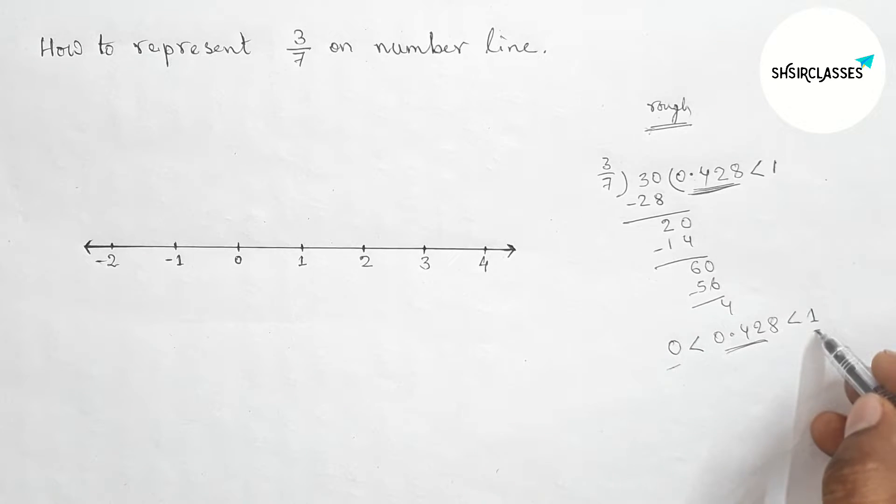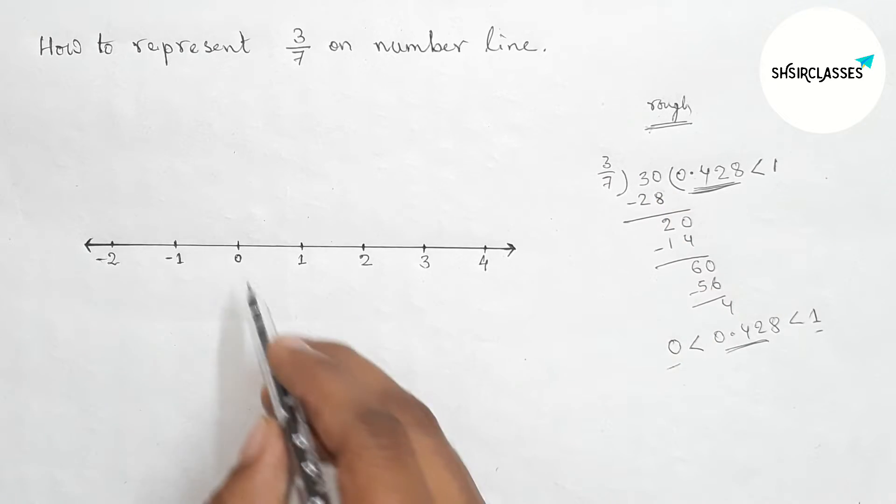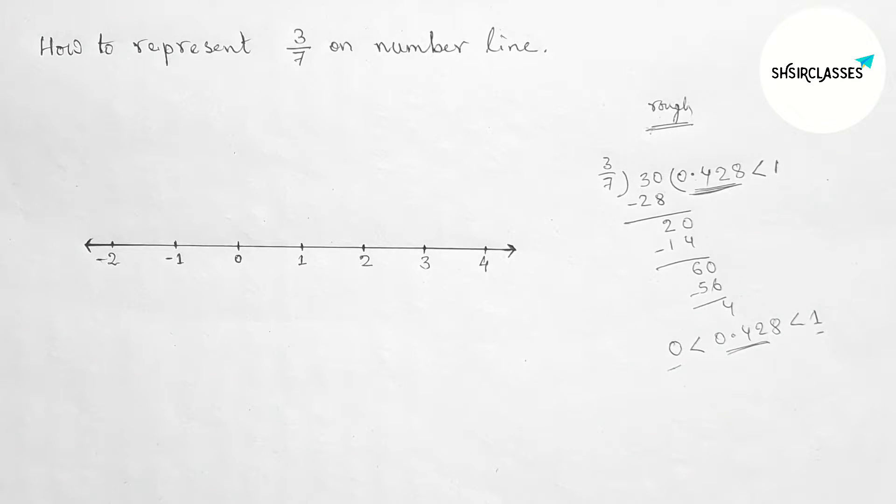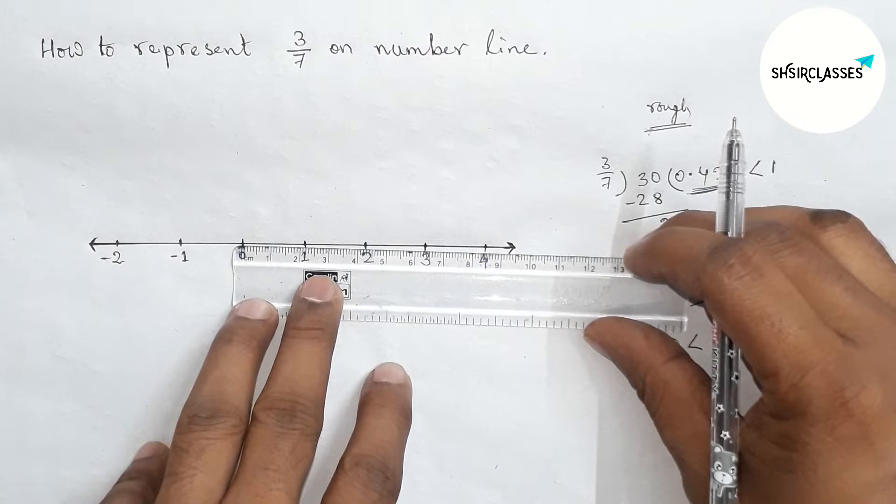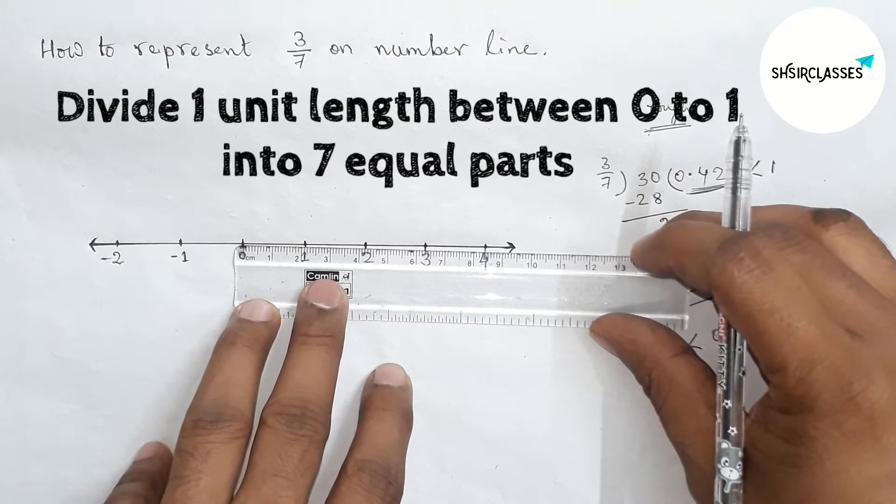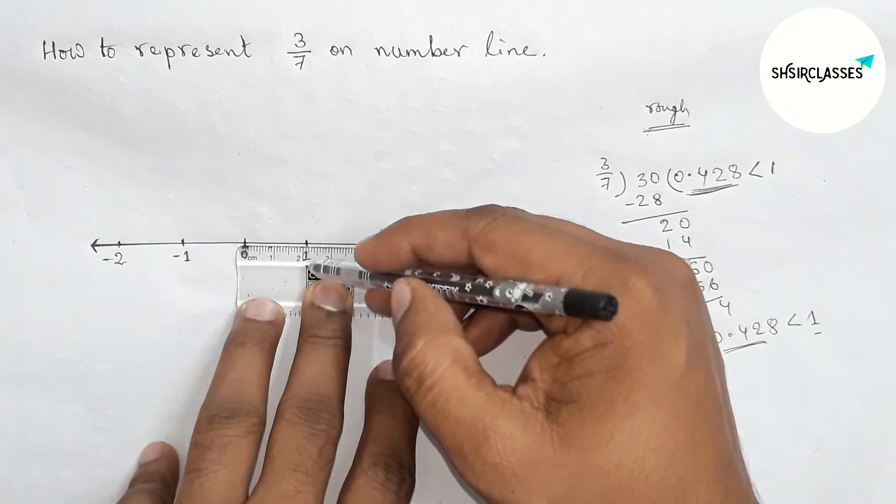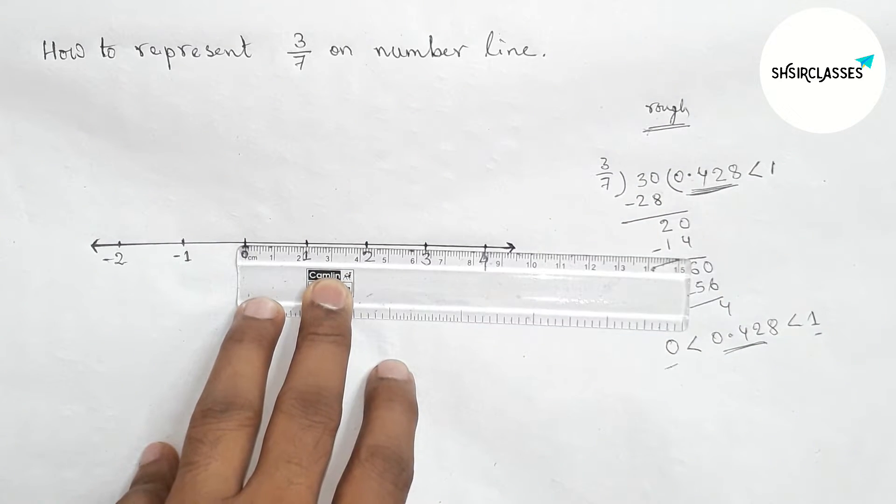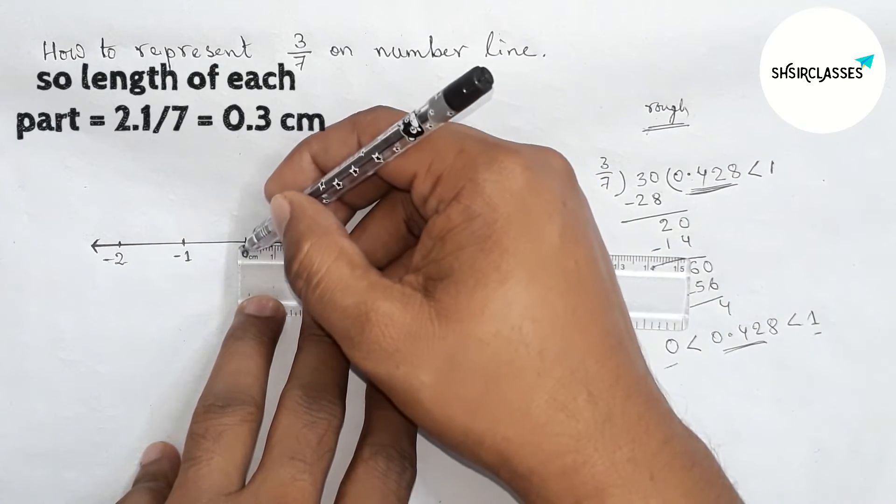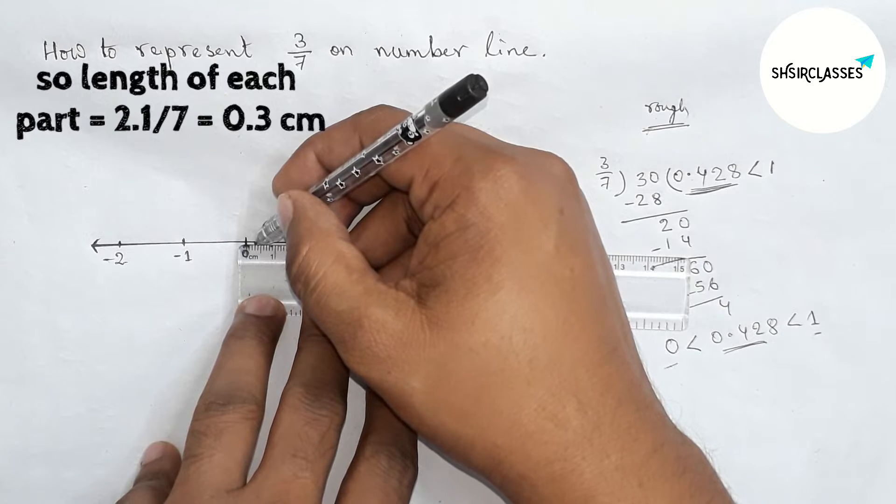The value of 3/7 lies between 0 and 1. So here, first we have to divide the length between 0 and 1 into 7 equal parts. The length of each equal part is 0.3 centimeters.